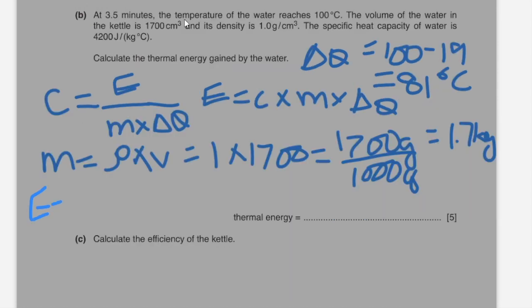Energy equals specific heat capacity into mass into change in temperature, which equals 5.8 into 10 to the power of 5 joules.